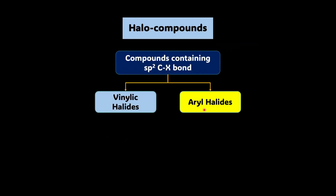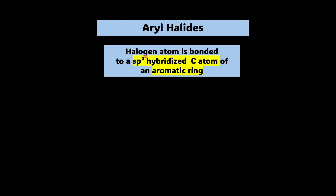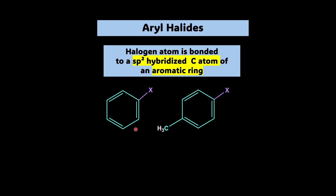What are aryl halides? The term aryl is used for benzene. When the halogen is attached to an SP2 hybridized carbon atom of an aromatic ring — in our case the benzene ring — that is what we call an aryl halide. This can be a substituted benzene as well, with the halogen directly attached to the benzene ring. Mind you — if the halogen is directly attached to the benzene ring, it shall not be called an alkyl halide, but an aryl halide.